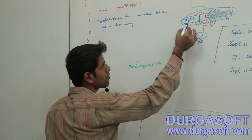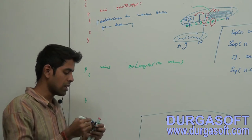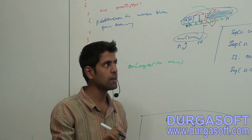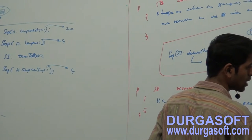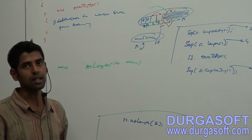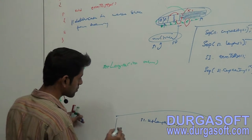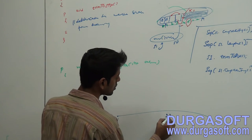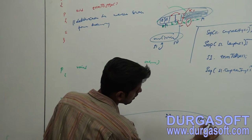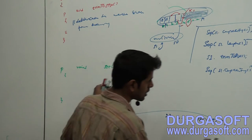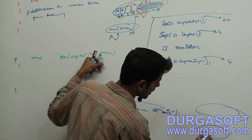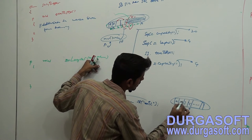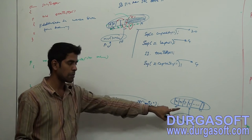These two blocks will be having customized data; the remaining two blocks will not have any customized data. Now, think that I have created a StringBuffer s1 equals to new StringBuffer of 'anil'. Because of this statement there will be a char array. Now 'a', 'n', 'i', 'l' will be the data.